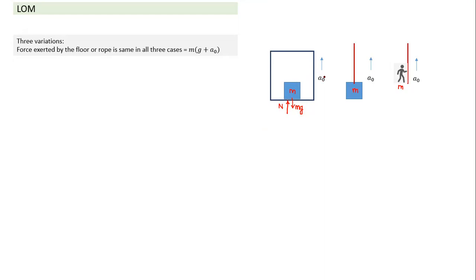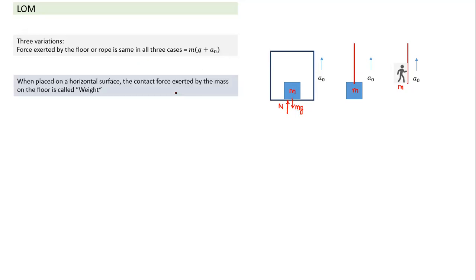Weight is the force exerted by an object on a horizontal surface, which is also equal to the normal reaction exerted by the horizontal surface on the mass. So this will be equal to mg. But if the object has upward acceleration, the upward force must be greater than mg. If acceleration is downwards, the vertically upward force will be lesser than mg. When the object is not accelerated in the ground frame, this is called real weight. When there is acceleration, this is called apparent weight.